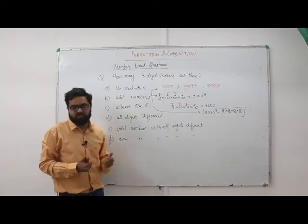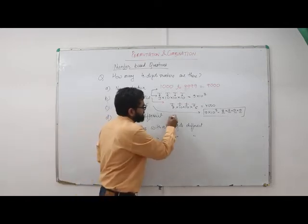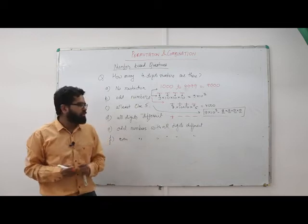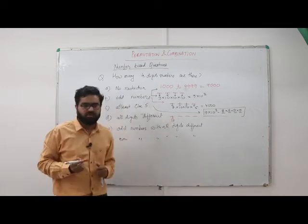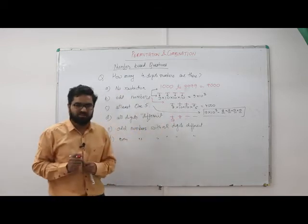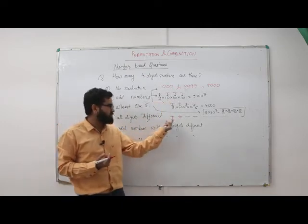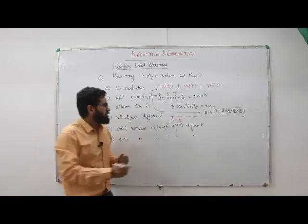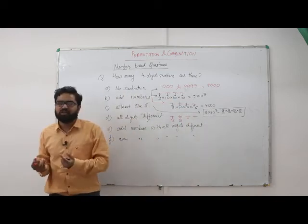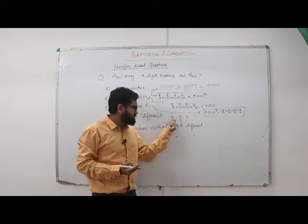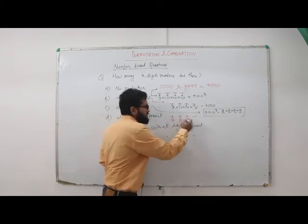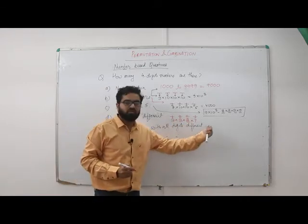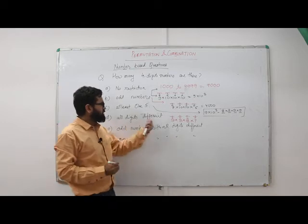Question d: four-digit numbers with all digits different. At the thousands place we have 9 choices (1–9). At the hundreds place we had 10 choices but one digit is already used, so 9 choices. At the tens place two digits are used, so 8 choices. At the units place three digits are used, so 7 choices.